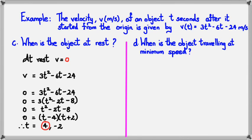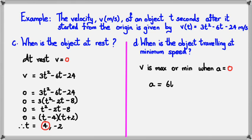When is the object traveling at minimum speed? Velocity is at a maximum or minimum when acceleration equals 0. Using a = 6t − 6, set 0 = 6t − 6, giving t = 1. So after 1 second, the velocity is at its minimum speed.